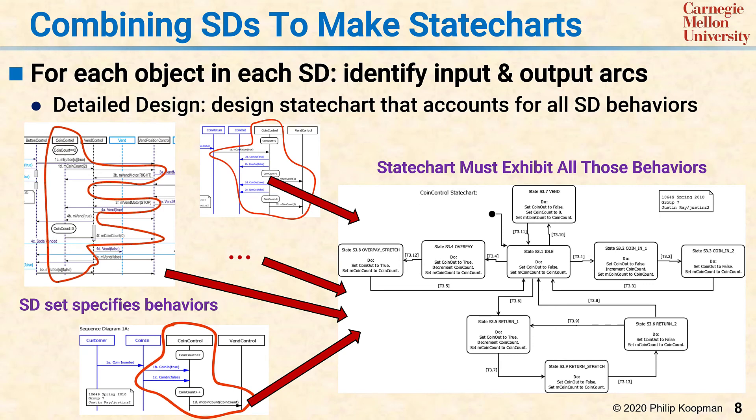When you're done, what needs to be true is that the state chart, when executed, will always accept the inputs in the sequence diagrams and send the correct outputs, so that whichever sequence diagram is active will result in a system behaving the way it's supposed to.